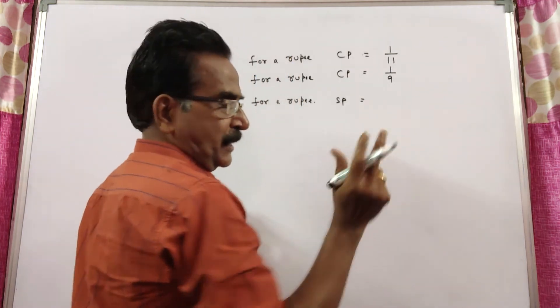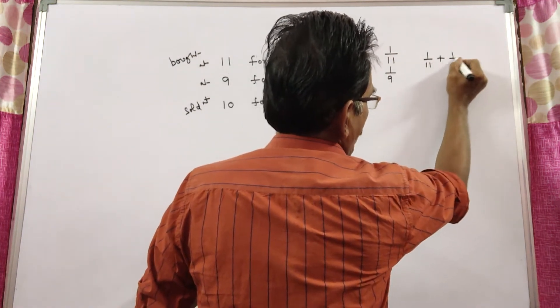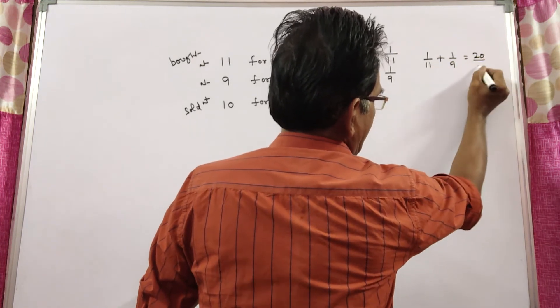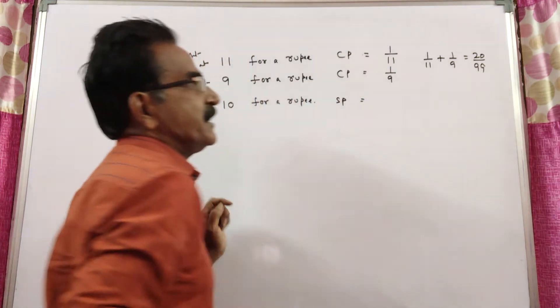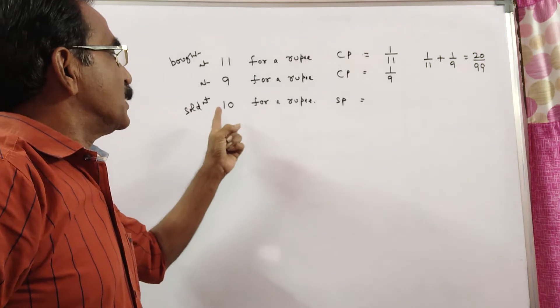So the cost price of 2 oranges is 1 by 11 plus 1 by 9, which is 9 plus 11, 20 by 11 times 9 is 99. This is the cost price of 2 oranges.